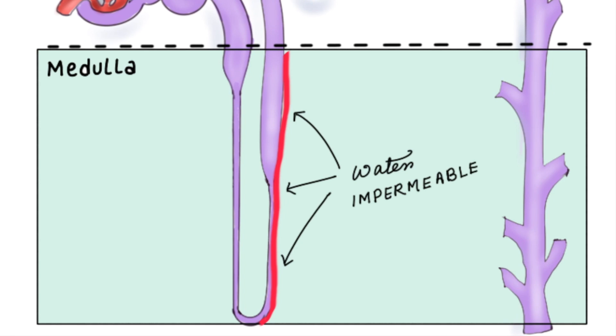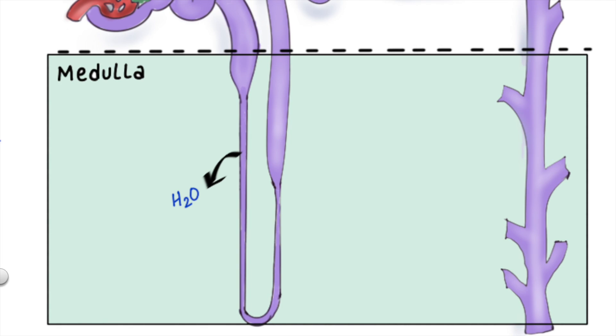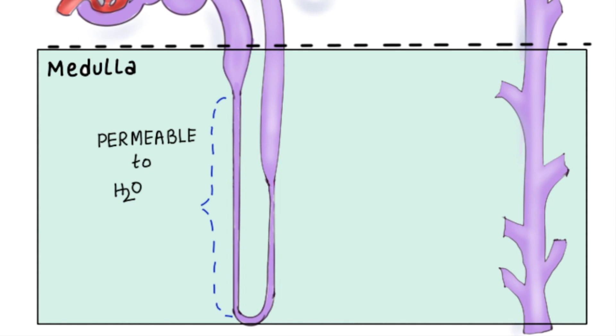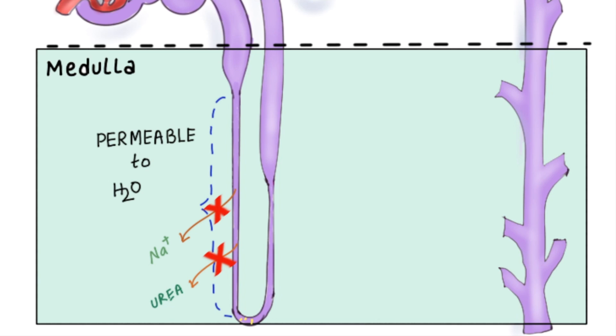But water itself cannot follow because the ascending limb is impermeable to water. So this makes the interstitial fluid salty. However, the descending limb is permeable to water but has very low permeability to ions such as sodium and also urea. So as the filtrate travels down the descending limb, water leaves by osmosis because of the salty environment of the medulla, or you can say it is hyperosmolar. By the time the filtrate reaches the bottom of the loop, it is highly concentrated as significant amounts of water have left.